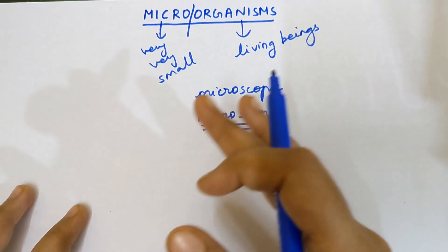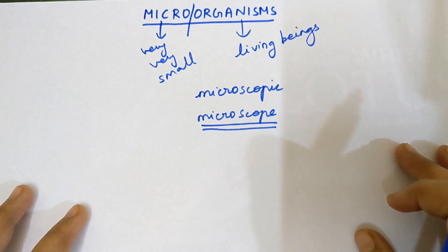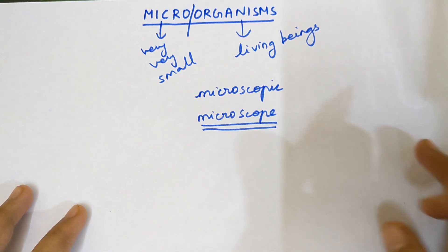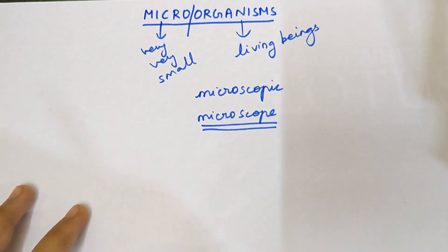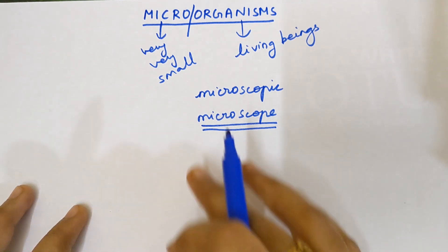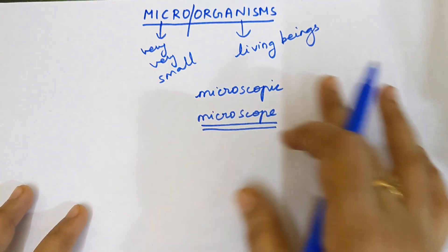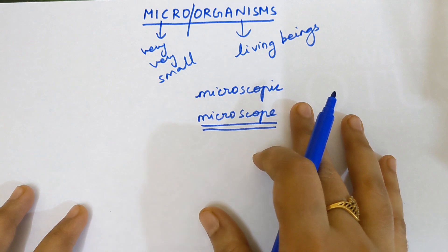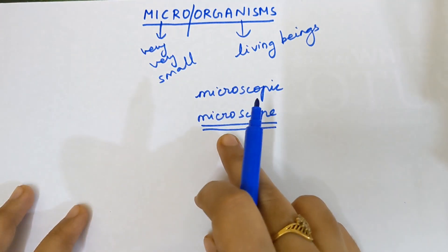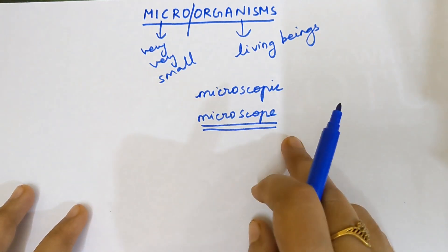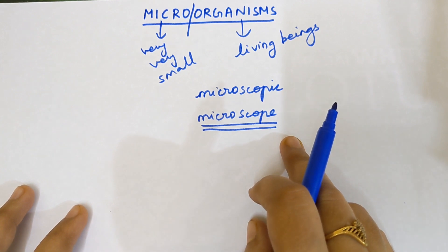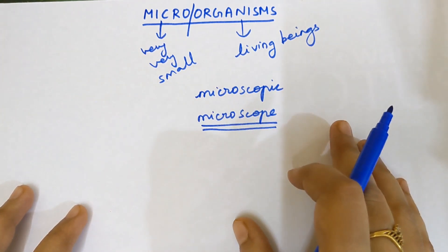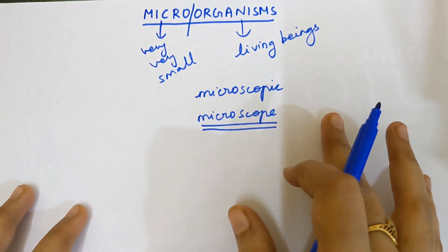Even around me there are many micro-organisms, but I am not able to see them with my naked eye. Only with the help of a microscope am I able to see them. Therefore, micro-organisms are known as microscopic because they can be visible only by looking under the microscope.